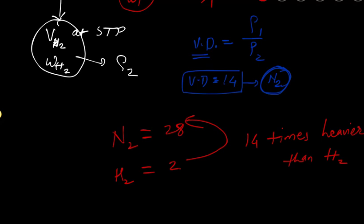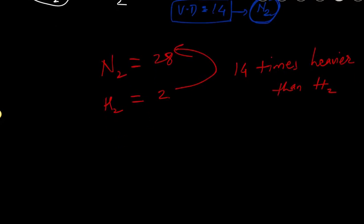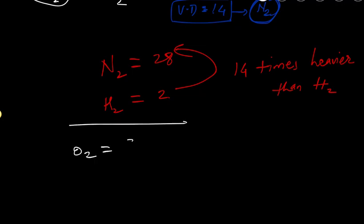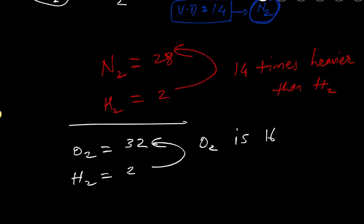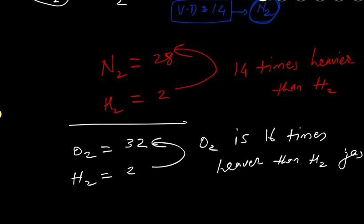This formula will always work, at least approximately, and you will get the correct answer. Think about another example: O₂ has molecular mass 32 and hydrogen has molecular mass 2, so O₂ is 16 times heavier than hydrogen.